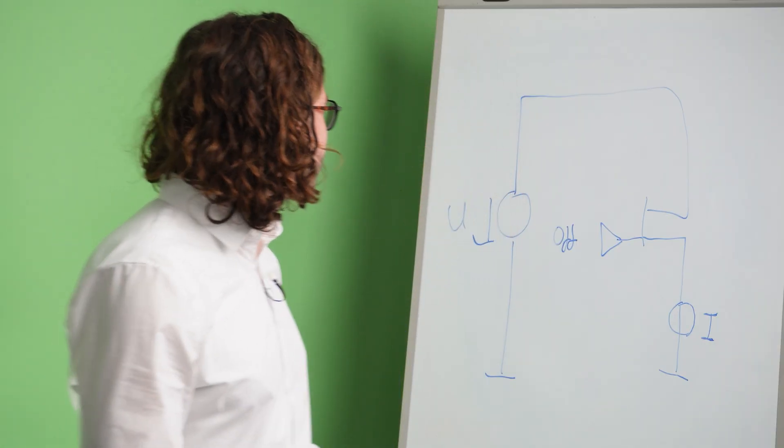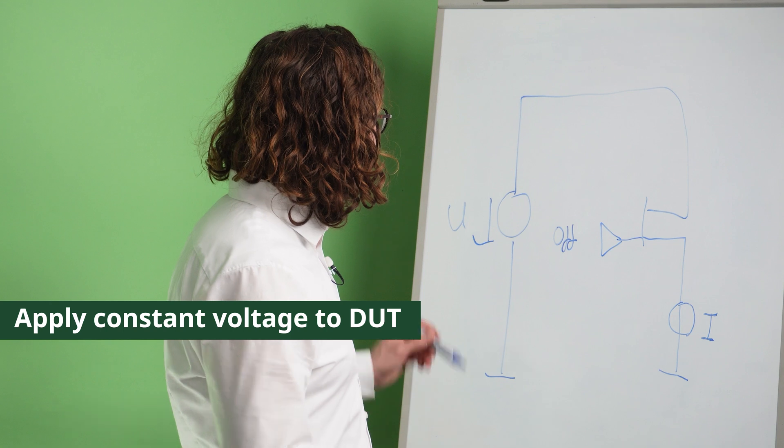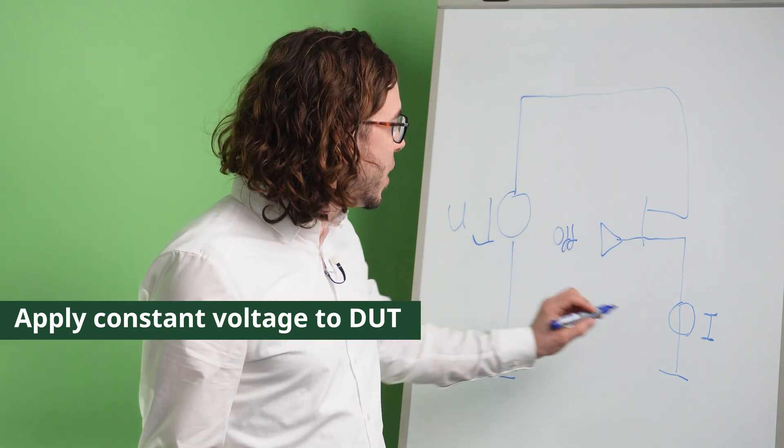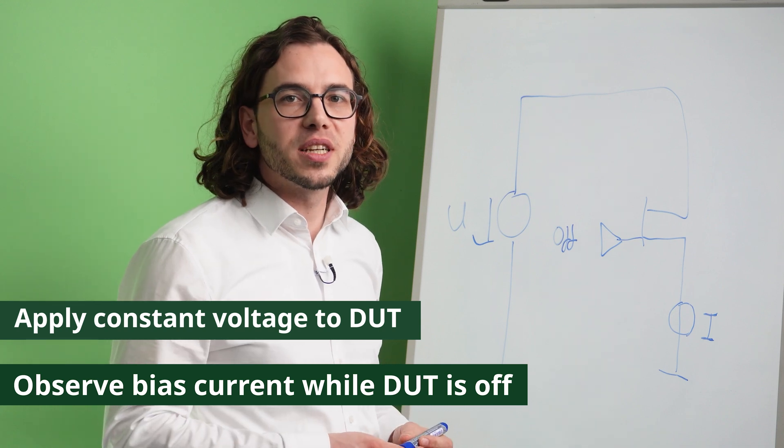HTRB is a test where we are testing the device isolation barrier while also applying high temperature and high humidity. The block diagram is roughly the same as with HTRB. We are applying a constant voltage and make sure that the device is in off state while observing the bias that is still running through the device.